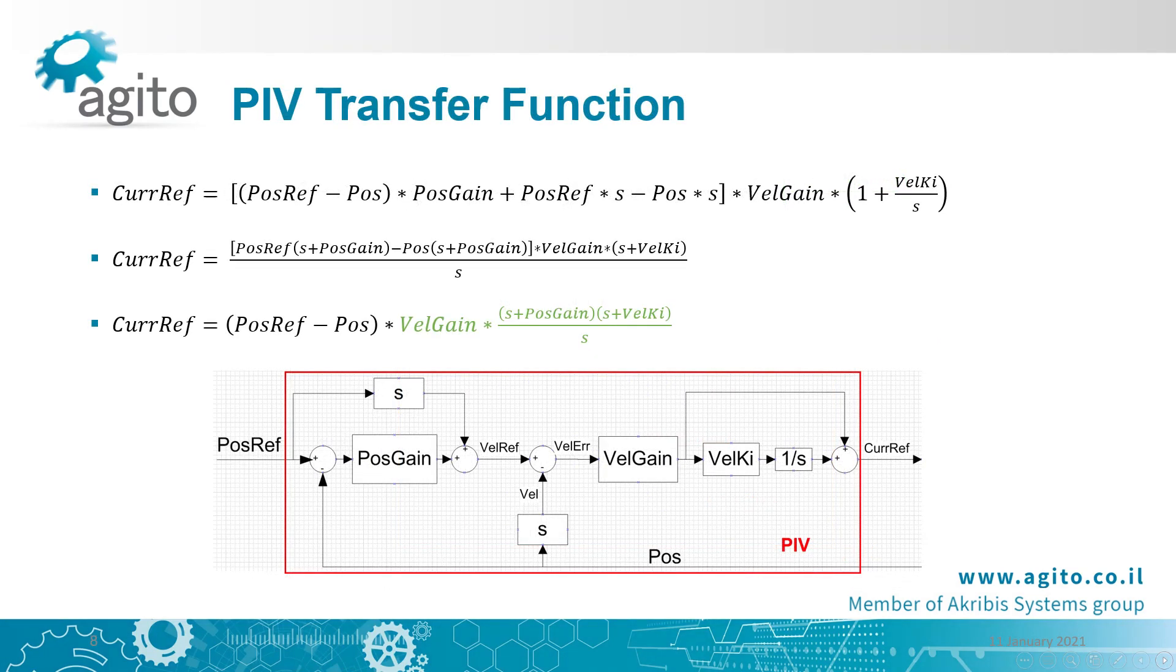For the PIV, we essentially added another loop. The outermost loop is the position loop, then there's the added velocity loop. This architecture adds a clear advantage over PID control in applications where different feedbacks are used for the position and velocity loops. For example, the position loop is fed by an encoder, and the velocity loop by a tachometer.